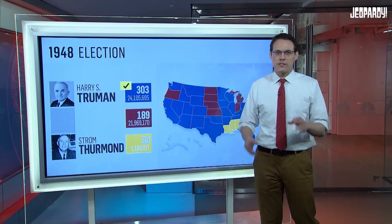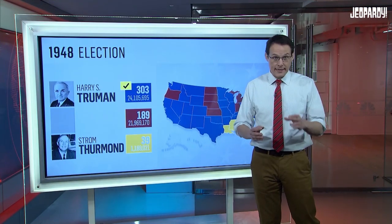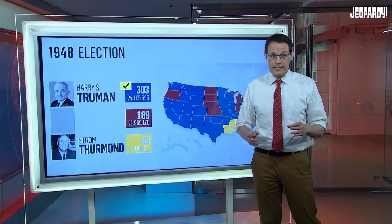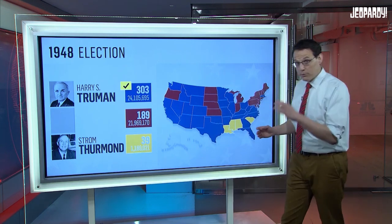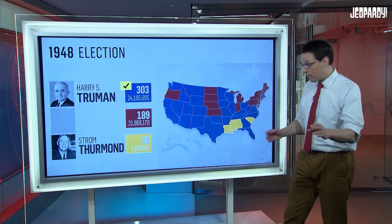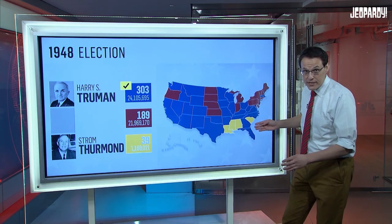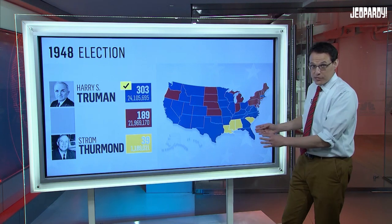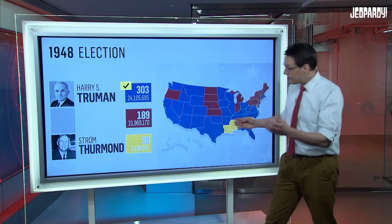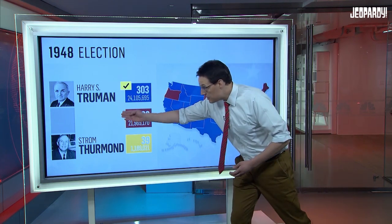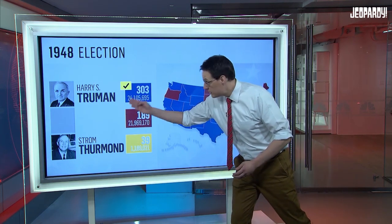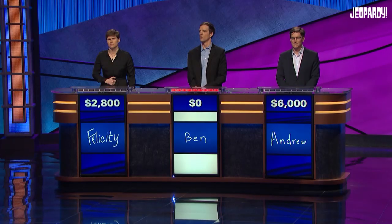Upset over the inclusion of a civil rights plank in the 1948 Democratic platform, Strom Thurmond split the party, capturing four southern states with his Dixiecrat party and nearly helping this Republican defeat Harry Truman. Ben: Who is Dewey? Right.